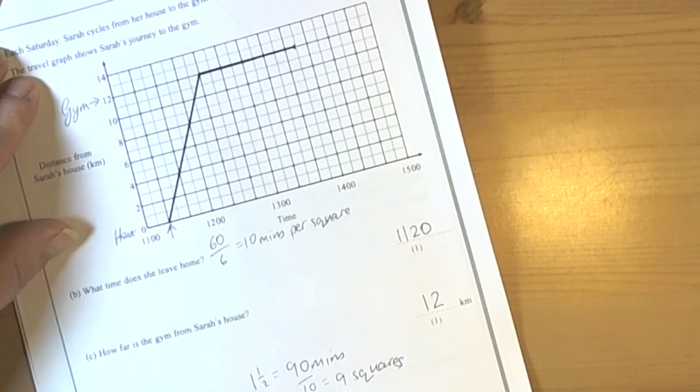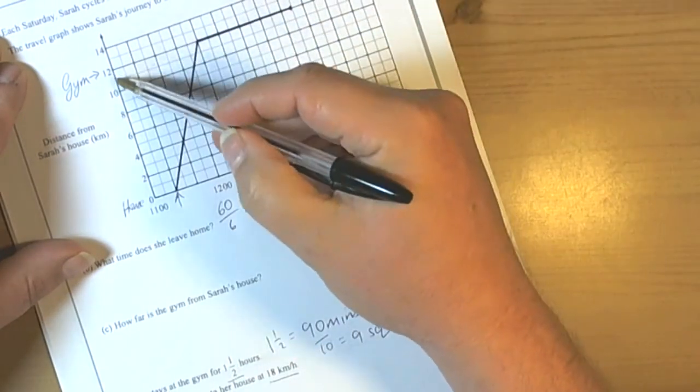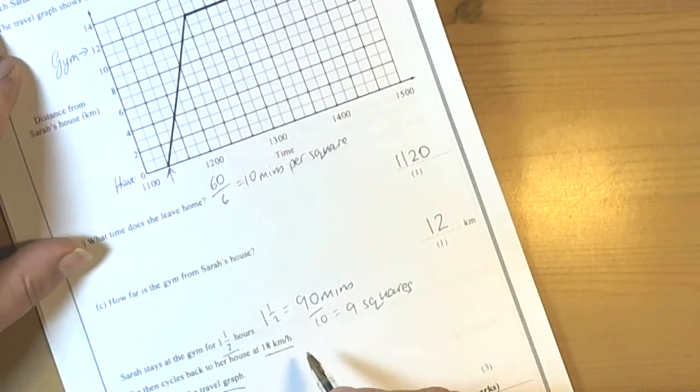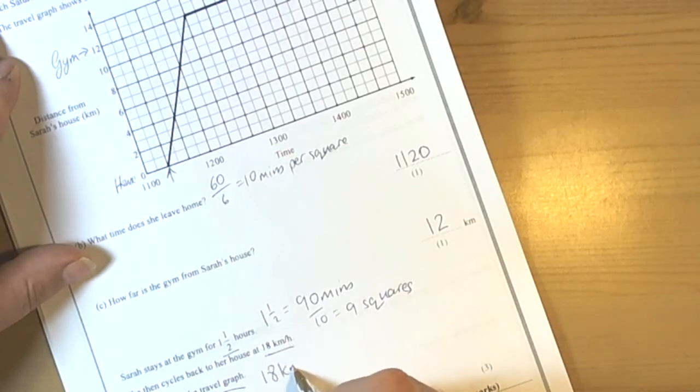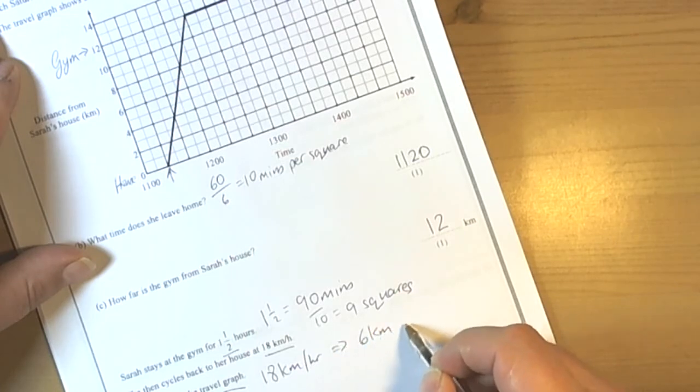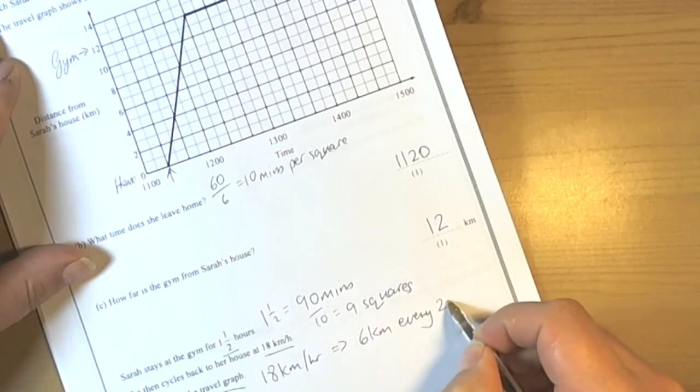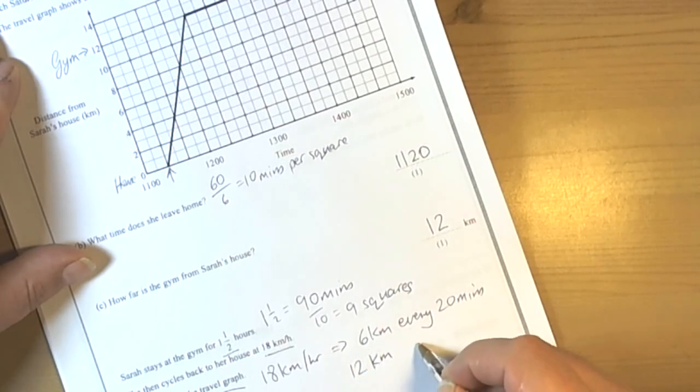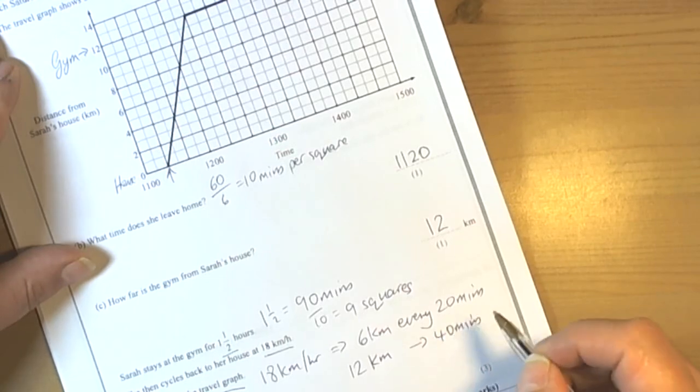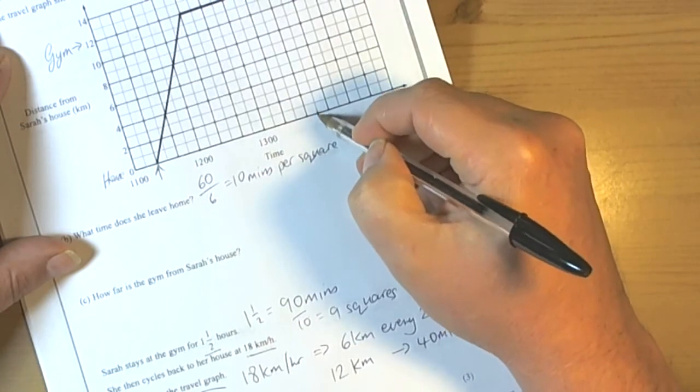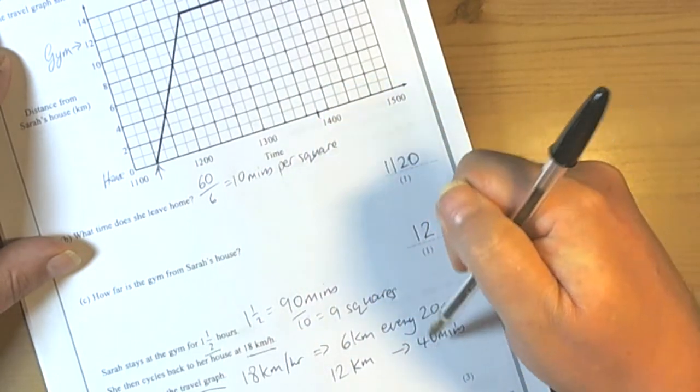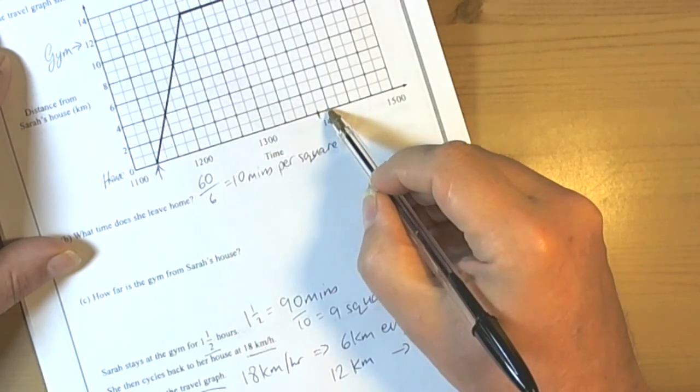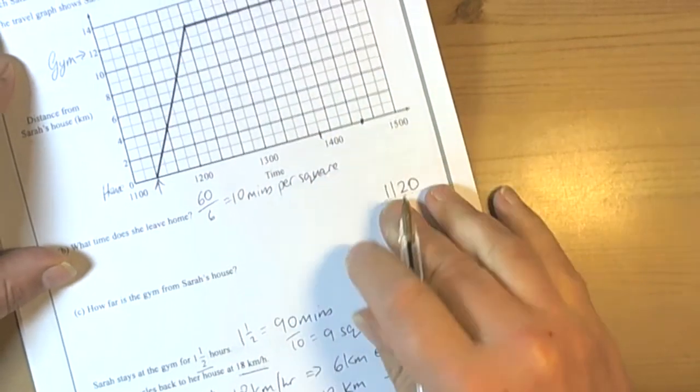She then cycles back to the house at 18 kilometers per hour. Well she's got 12 kilometers to travel. 18 kilometers per hour would be the same as 6 kilometers every 20 minutes, so a third of an hour. 6 times 3 is 18. So if she does 6 kilometers every 20 minutes then 12 kilometers is the distance she's got to travel. So that will be 40 minutes later on. So at the moment at this stage she's leaving the gym here and she's got to travel 40 minutes so that's another 4 squares. 1, 2, 3, 4. So she's going to get home at this time here.